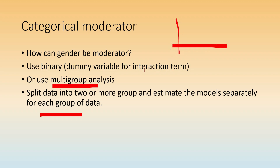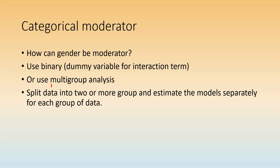For the interaction term approach we use the same procedure: create the interaction term, check significance, and examine slopes — two slopes for a binary variable, one for female and one for male. In multigroup analysis, we split the data into two or more groups, estimate the model separately for each group, and compare the results to see if path coefficients are significantly different. For complex models with many paths, multigroup analysis is more efficient than creating multiple interaction terms.